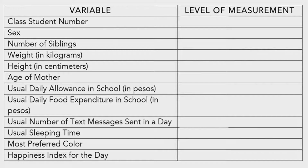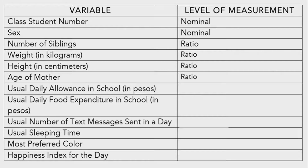Let's take a look at some examples for a better understanding of the levels of measurement. Class student number is nominal. Sex — male or female — is nominal. Number of siblings is ratio because there is an exact zero, like when you don't have any siblings. Weight is ratio, height is ratio, age of mother is ratio, usual daily allowance in school is ratio, usual daily food expenditure in school is ratio, and usual number of text messages sent in a day is also ratio.